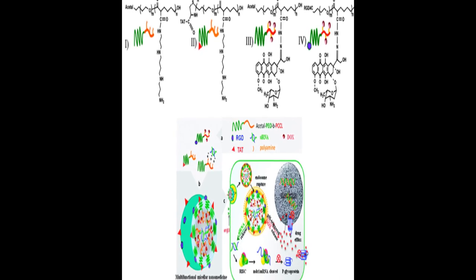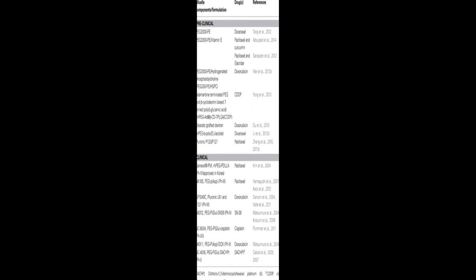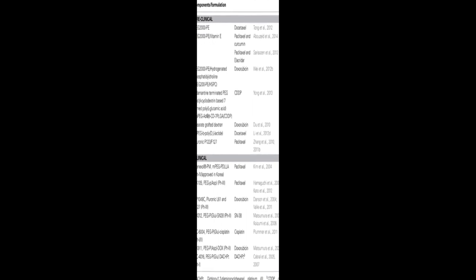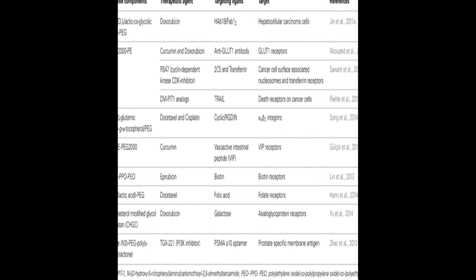Polymeric micelles are self-assembling nanoconstructs made of amphiphilic copolymers with a core shell structure that have gained popularity due to their ability to solubilize poorly soluble pharmaceutical agents, biocompatibility, longevity, stability, and targeting capabilities.